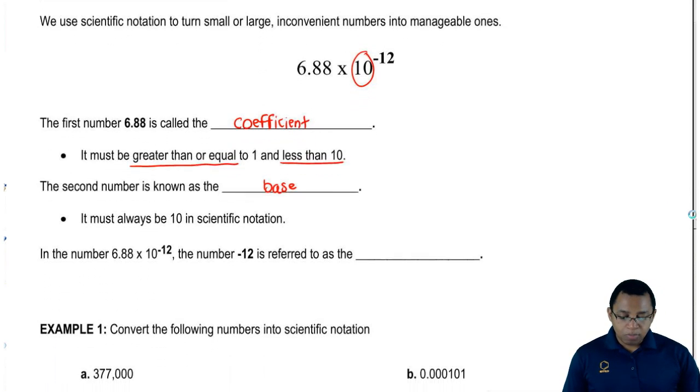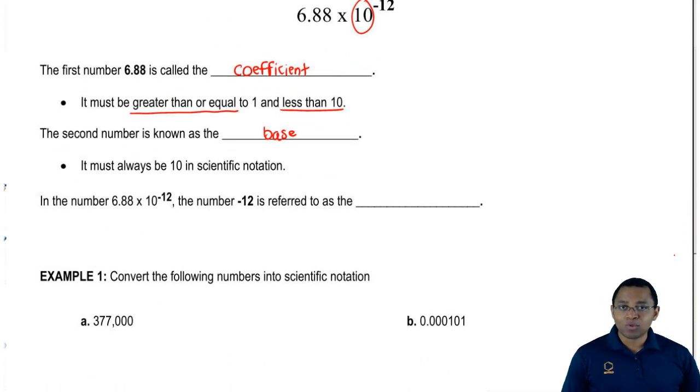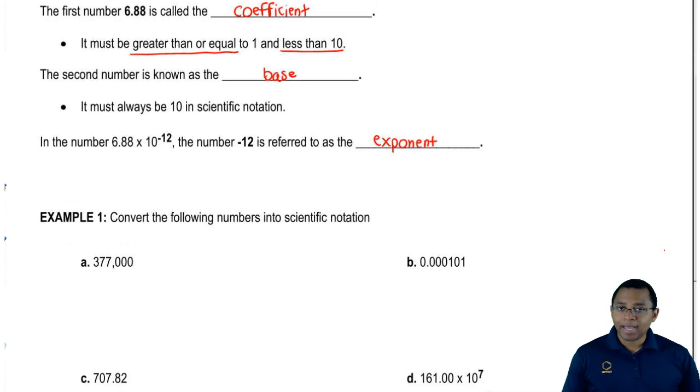Finally, we're going to say in 6.88 times 10 to the negative 12, the negative 12 number is known as our exponent. Those are the three portions that make up any scientific notation number that you're given. Just remember the guidelines for some of them and you'll be fine.